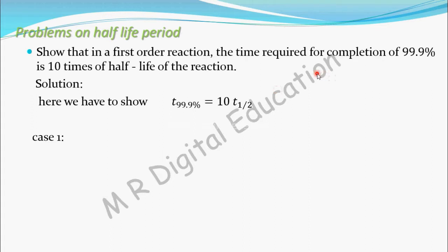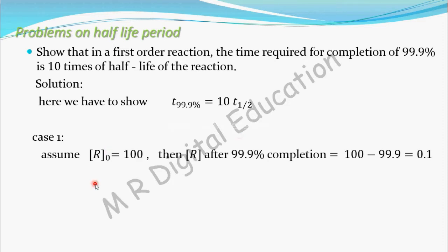Case one: let's find the equation for 99.9%. For that, when they give concentration in percentage, you take initial concentration as 100. Take initial concentration R-naught as 100. The concentration of the reactant R after 99.9% completion will remain 100 minus 99.9, that is equal to 0.1.